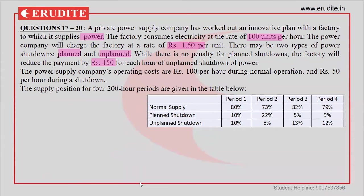This example shows how the power supply company earns revenue and incurs penalties. Additionally, the power supply company's operating cost is ₹100 per hour during normal operation and ₹50 per hour during shutdown. The entire problem considers a 200-hour period, and a table gives four such 200-hour periods with percentages of normal supply, planned shutdown, and unplanned shutdown.